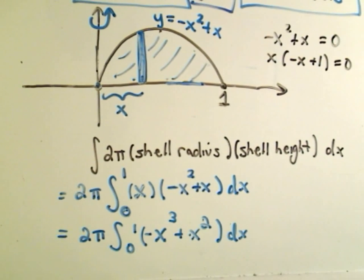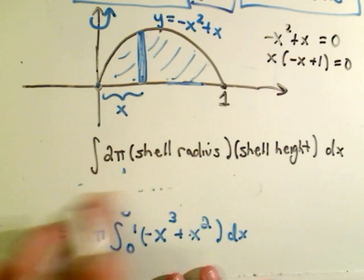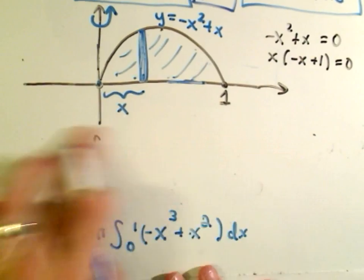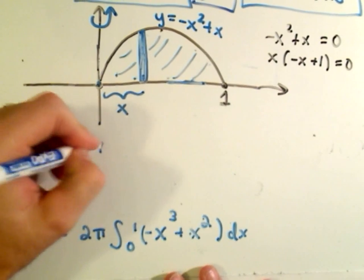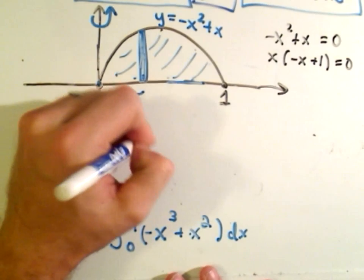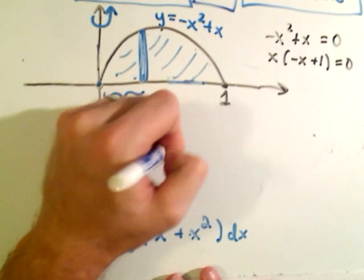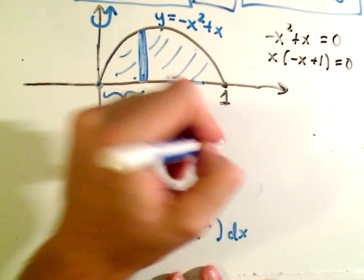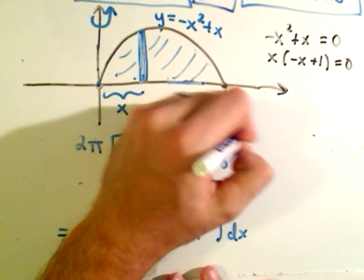When you have to integrate that, just use the normal power rule. So after you integrate, you'll get 2 pi, negative x to the 4th over 4, plus x to the 3rd over 3. From 0 to 1.